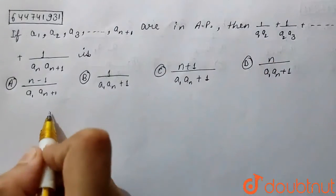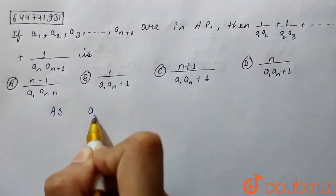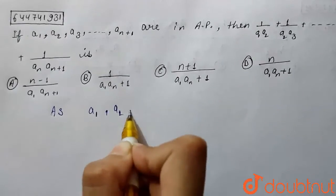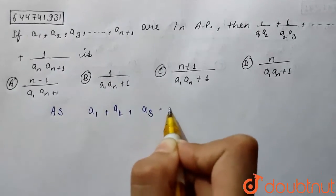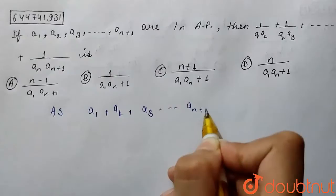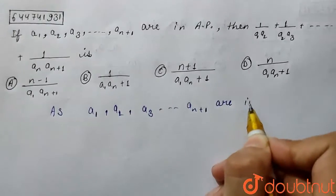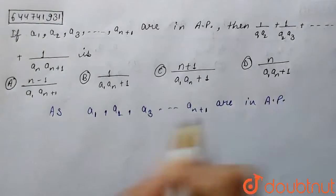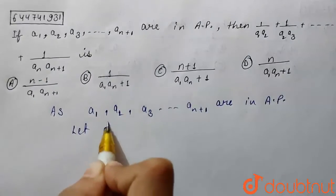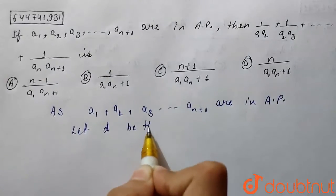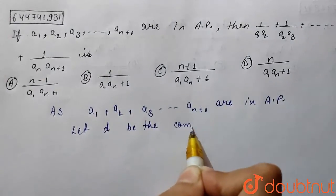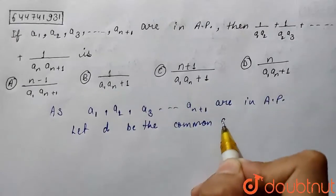So let's say a1, a2, a3, an plus 1 are in AP. So let d be the common difference of the given AP.